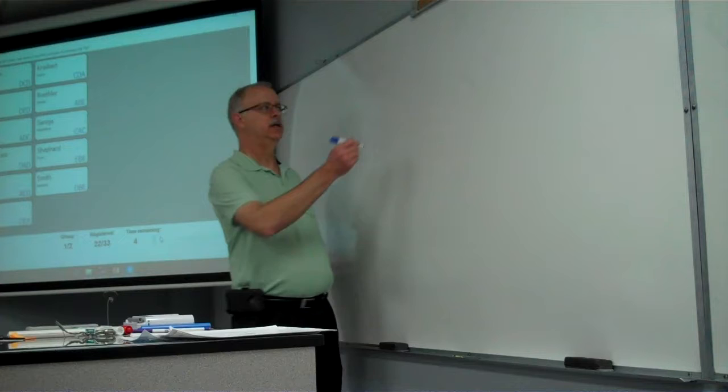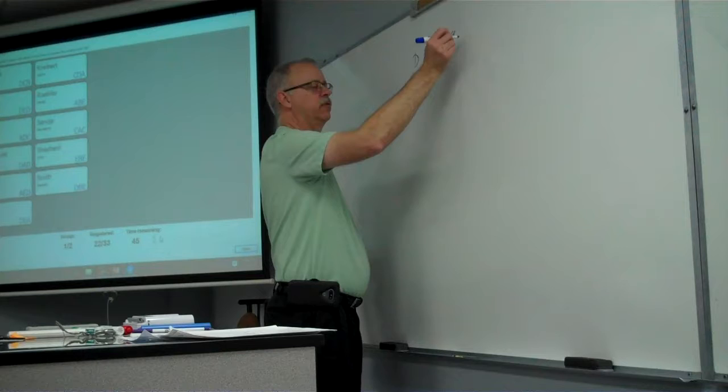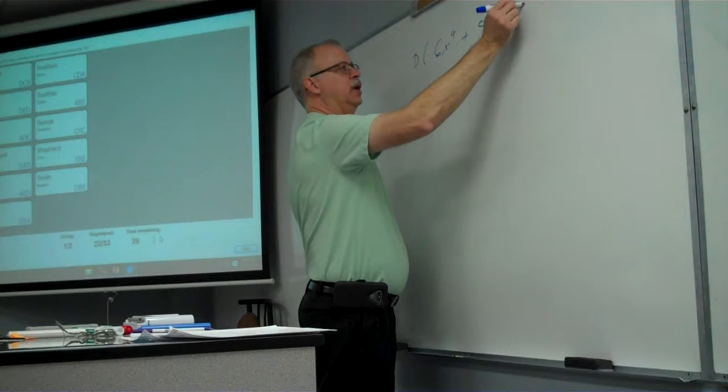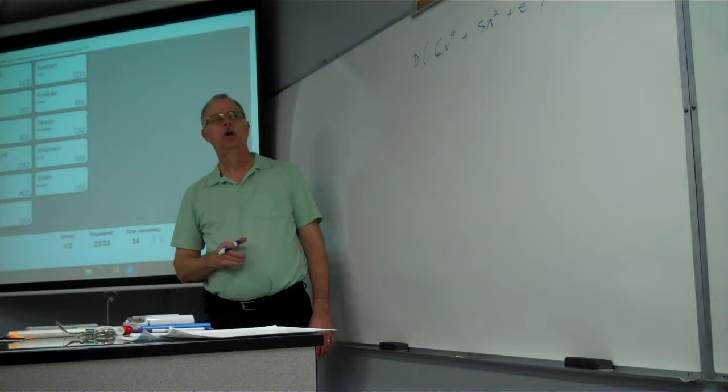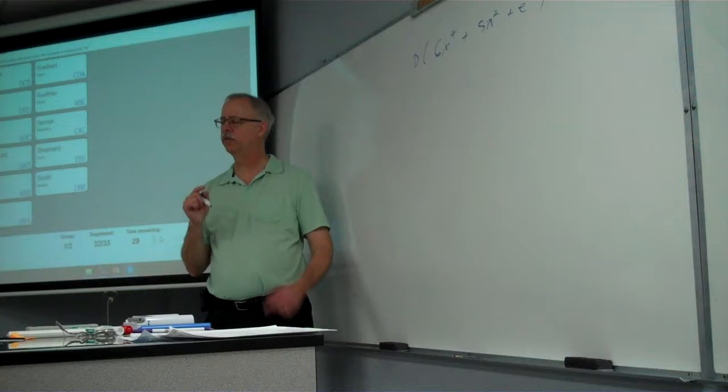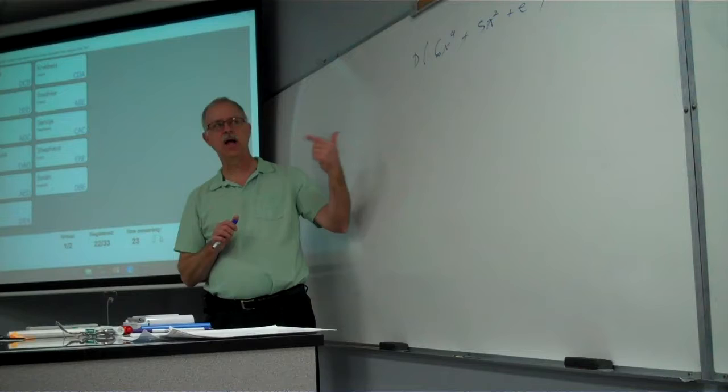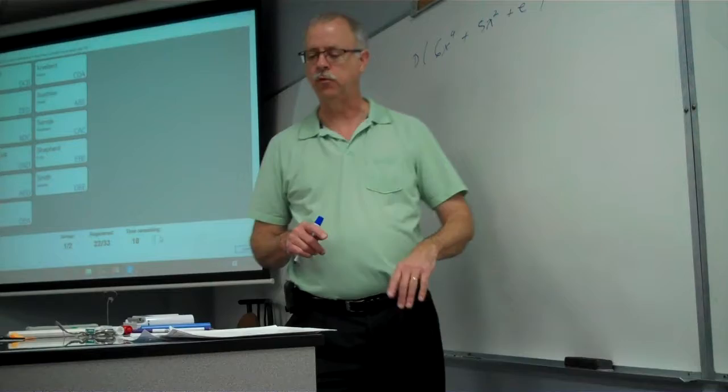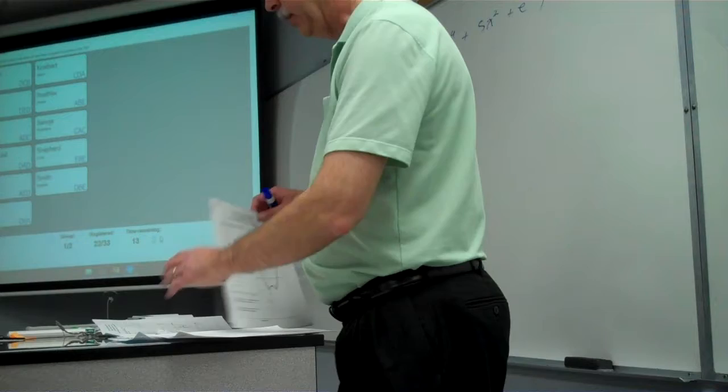The most major thing we're going to need from the exam going forward is knowing how to take the derivative of things like 6x to the fourth plus 5x squared plus e to the x — those more straightforward derivatives. Because in a couple of days we're going to get to the process of how would we undo that? If we were told what the derivative was, could we figure out the original function?